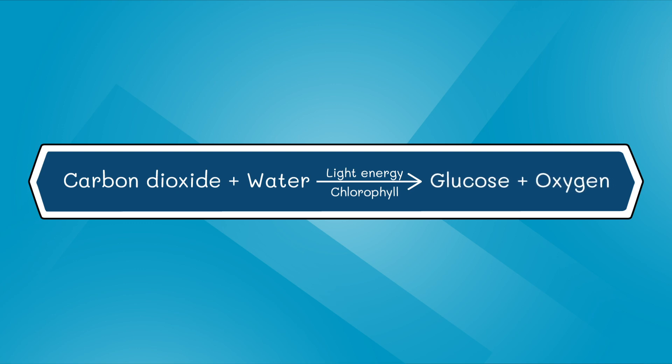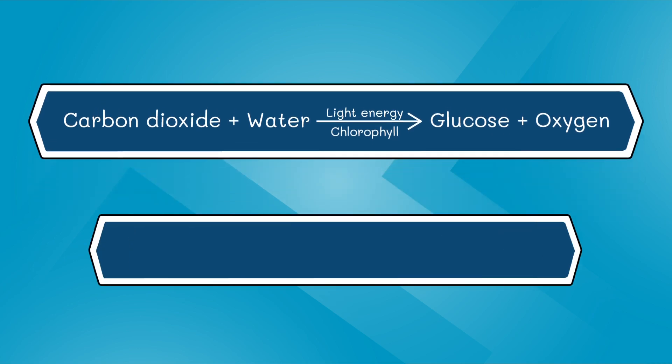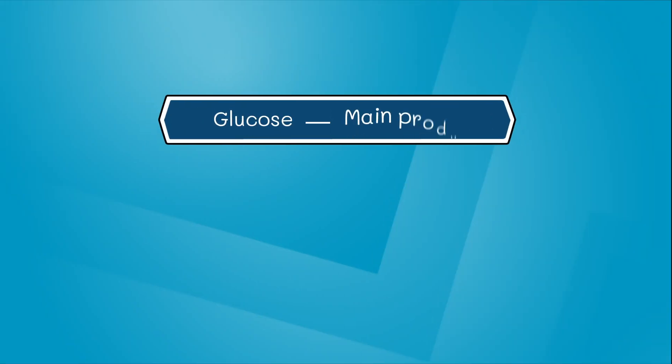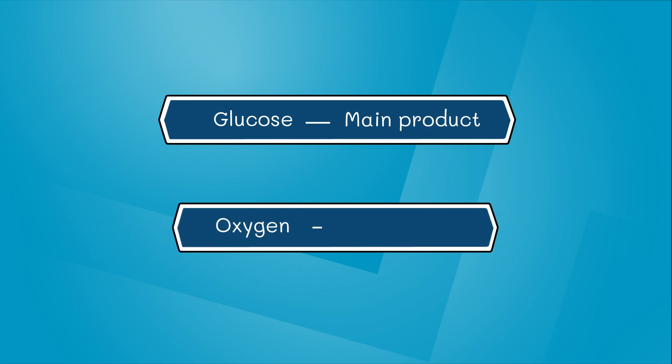From this equation, we can see two products. Glucose, a type of carbohydrate, and oxygen are formed during photosynthesis. Glucose is the main product of photosynthesis, while oxygen is the by-product.